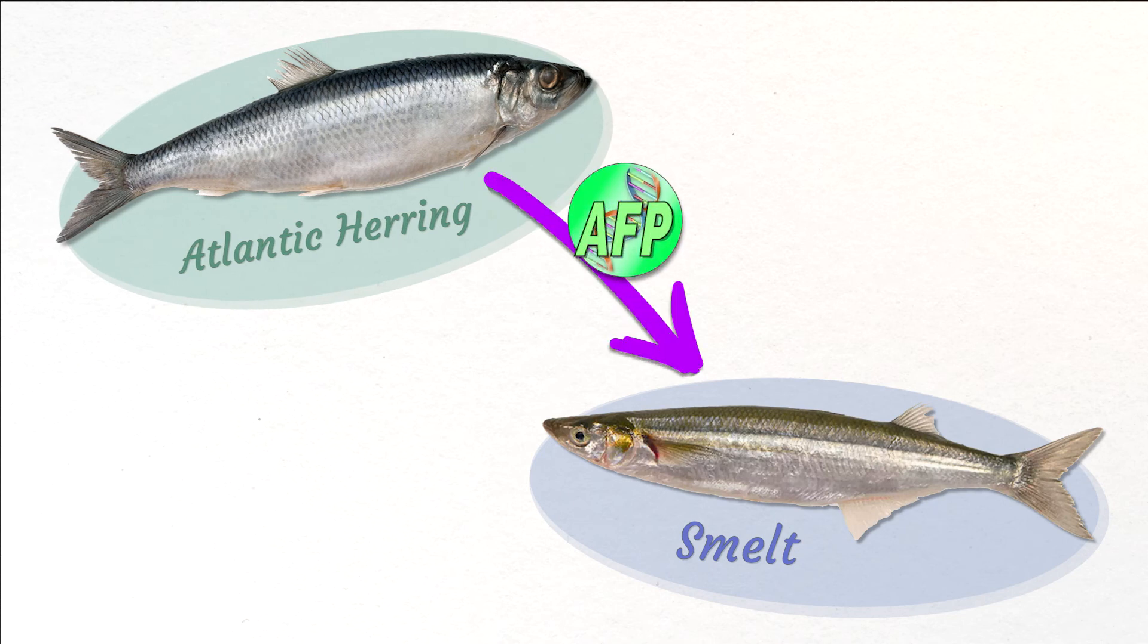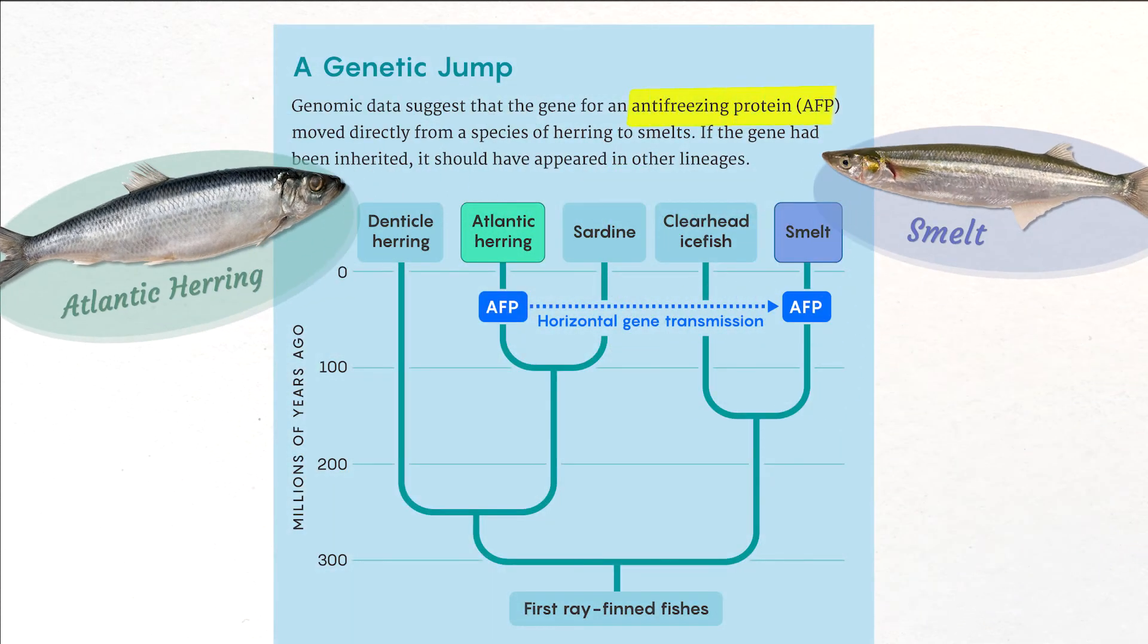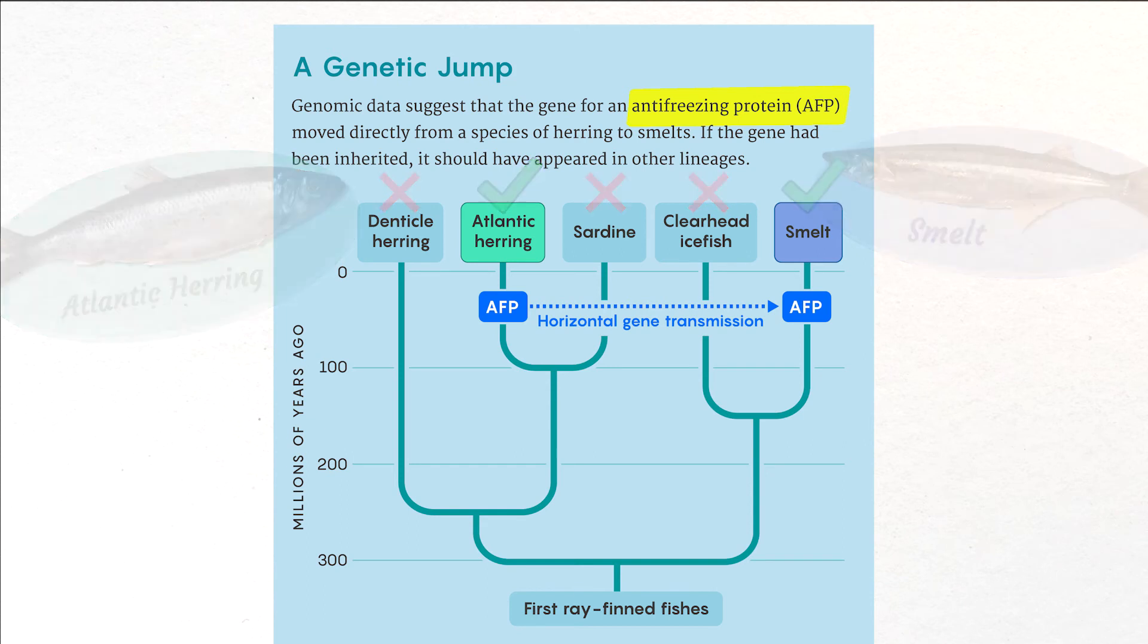Two groups of fish, herring and smelts, that can't interbreed share an icy water survival gene that all other related fish species don't have. A mystery that seems to have horizontal gene transfer as the only explanation.